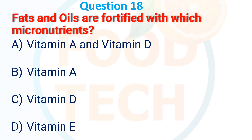Question 18: Fats and oils are associated with which micronutrients? A. Vitamin A and Vitamin D, B. Vitamin A, C. Vitamin D, D. Vitamin E. The answer is A. Vitamin A and Vitamin D.